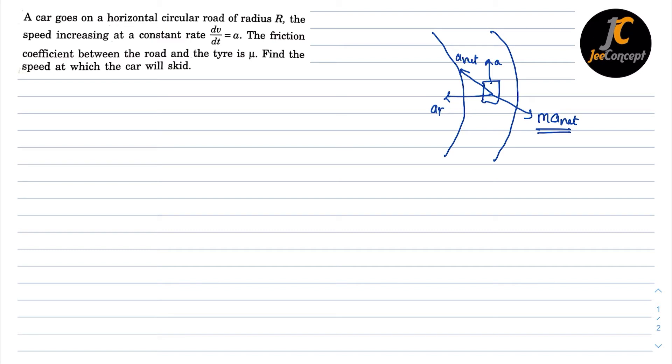So first of all let's calculate the a_net value. a_net is nothing but a_tangential squared plus a_radial squared and we know that a_radial is v²/R and given that a_tangential is a. Now putting the value here, a_net will become under root a² plus v⁴ upon R².